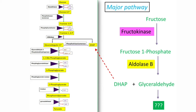DHAP directly enters into glycolysis because it is one of the intermediates of glycolysis, and glyceraldehyde is also converted into intermediates of glycolysis in different ways.